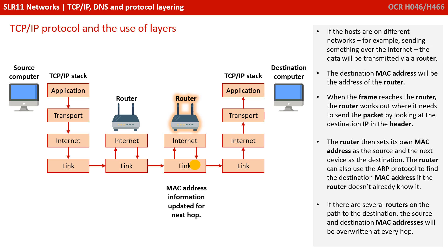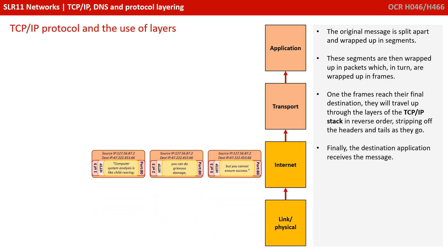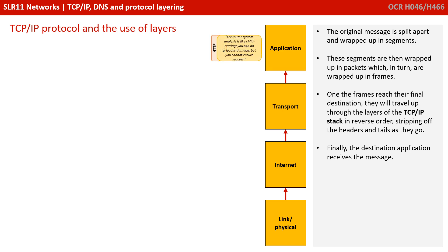If there are several routers on the path to the destination, the source and destination MAC address will be overwritten at each hop on the journey. The original message is split apart and wrapped up in segments; these segments are then wrapped up in packets, which are in turn wrapped up in frames. Once the frames reach their final destination, they travel up through the layers of the TCP/IP stack in reverse order, stripping off the headers and tails as they go, and finally the destination application receives the original message.